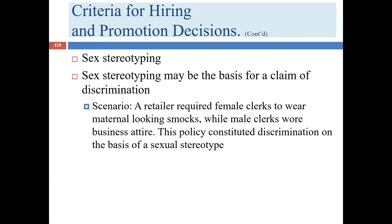The scope of sex stereotyping remains somewhat undetermined. Some courts have extended it to cover sexual orientation and gender identity under Title VII; others have limited it to expectations about the behavior of men and women without extending to gender identity or sexual orientation. The U.S. Supreme Court has not yet ruled definitively on this issue. The Fifth Circuit — covering Texas, Louisiana, and Mississippi — has not taken a position beyond the Hopkins decision and has not included sexual orientation or gender identity as covered categories under Title VII.